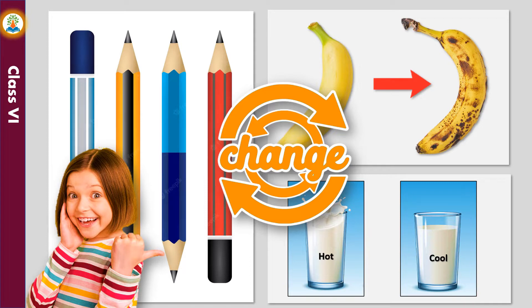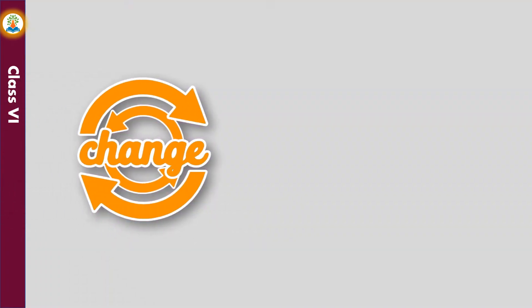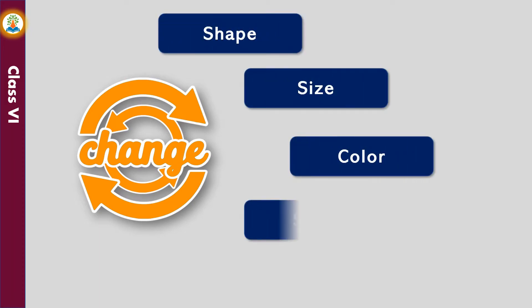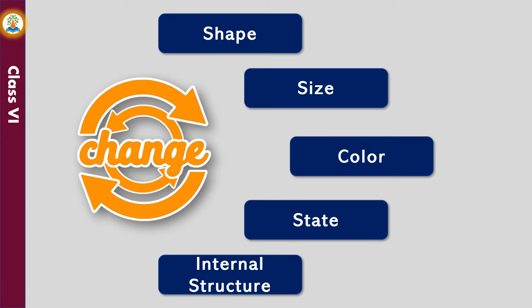Like, what happens when you sharpen your pencil or when a fruit rots? Some kind of change is taking place in each case. Every change has an underlying cause, and that cause leads to a visible change in the substance. A change refers to a noticeable difference in shape, size, color, state, internal structure, or any other property of a substance or an object.